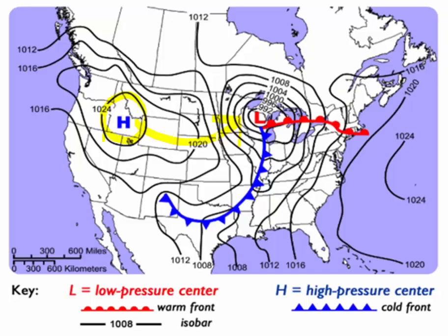The air continues down to 1008 and on down until it hits this low here at 992. We've got air converging at the low, so it's forced to rise up — the air rises, cools, condenses, and we end up with stormy precipitation there.